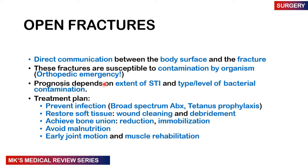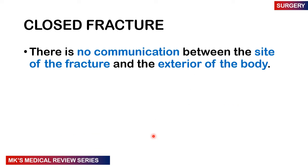In your treatment plan you want to include broad spectrum antibiotics, tetanus prophylaxis, restore the tissue with daily wound cleaning and debridement, then achieve bone union by reduction and immobilization — these patients do require theater. Avoid malnutrition: cover them with a high protein diet. Early joint motion and muscle rehabilitation prevents complications like contractures. With closed fractures there is no communication between the fracture site and the exterior, so they do not have a significant risk of infection.